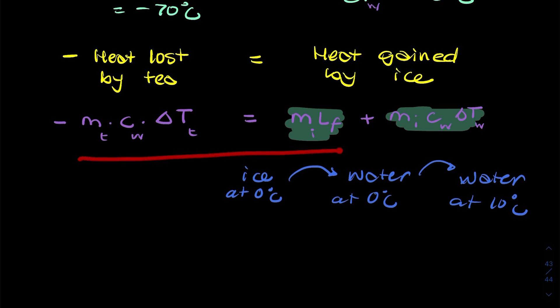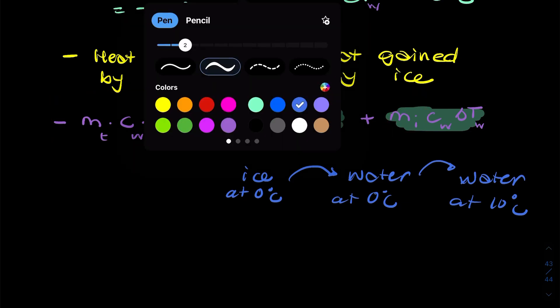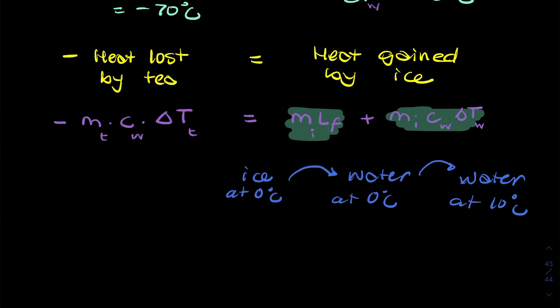So of all these, the only quantity we don't know is the mass of the ice. So I can rearrange all this and maybe take MI as a common factor. Let me do that in yellow. So minus MT CW delta TT equals MI into latent heat plus CW delta TW. So I've just taken MI as a common factor.